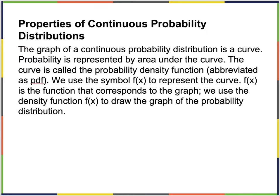A continuous random variable is represented by a curve, so it's not individual items anymore. Between any two points on the x-axis there's an infinite number of possibilities. The curve is called the probability density function, which we have been calling the PDF.